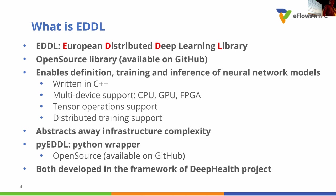There are very important words for the European Commission. First, it is a European effort to have a deep learning library. This library has been written from scratch by European partners, trying to have some competition against the other standard tools we already know. The other key word is the distributed nature — we were aiming for distributed training processes targeting HPC systems, such as IBM systems or Power9 systems with GPUs interconnected, and also FPGAs for inference processes, very energy efficiently. All of this is open source and available on the eFlows4HPC project GitHub repository.